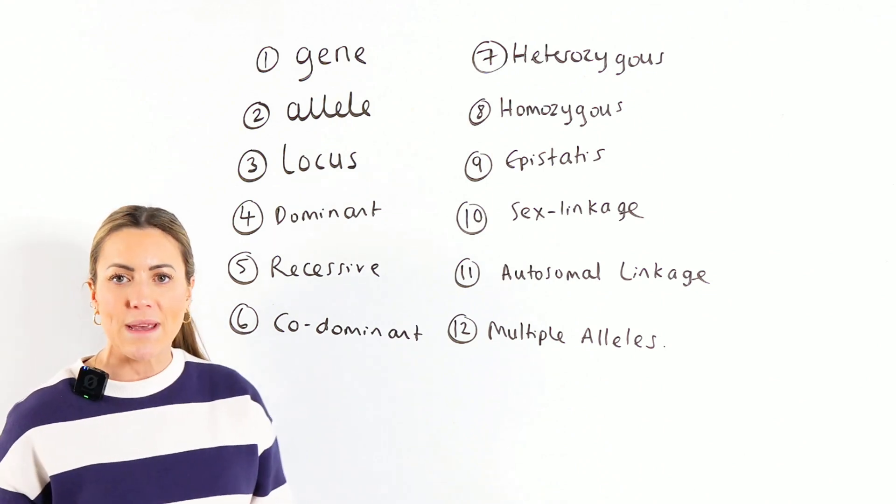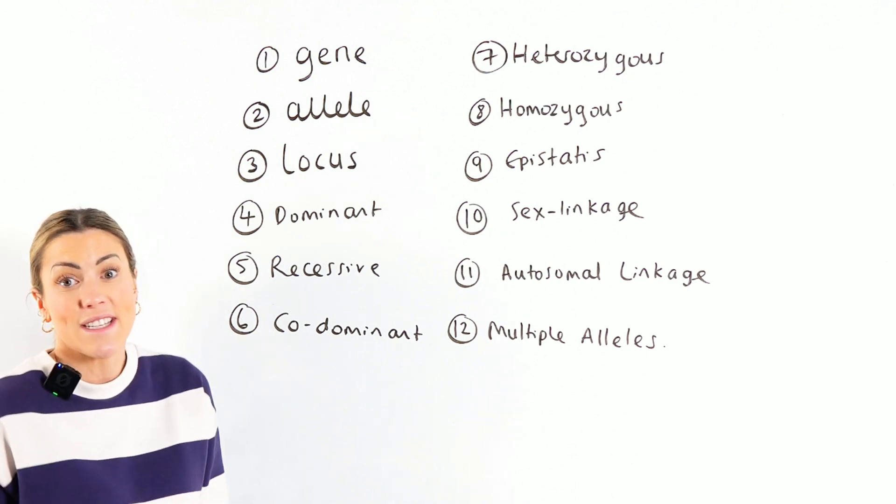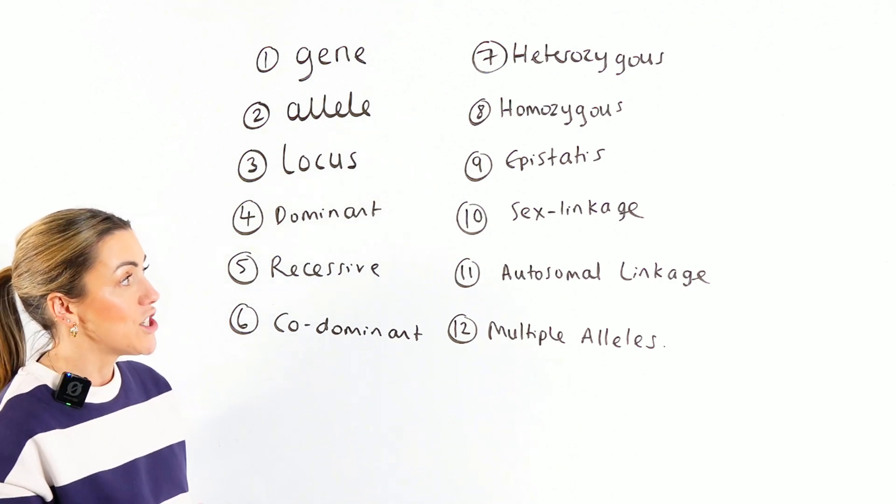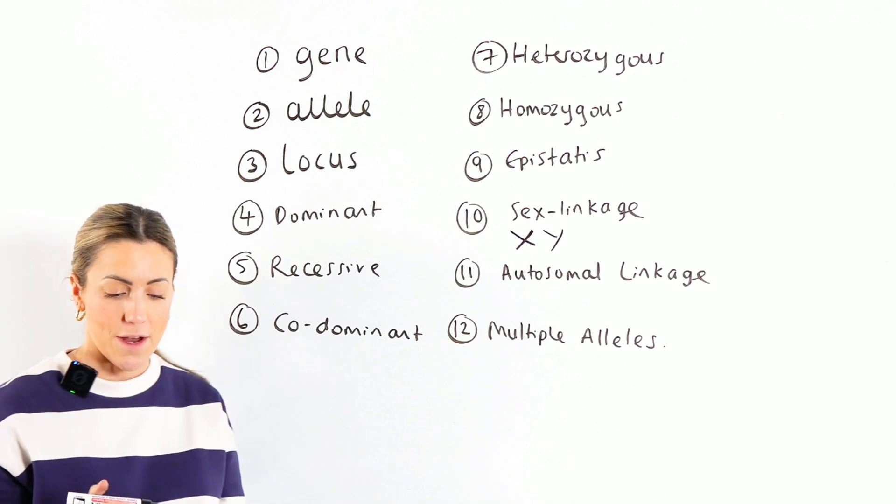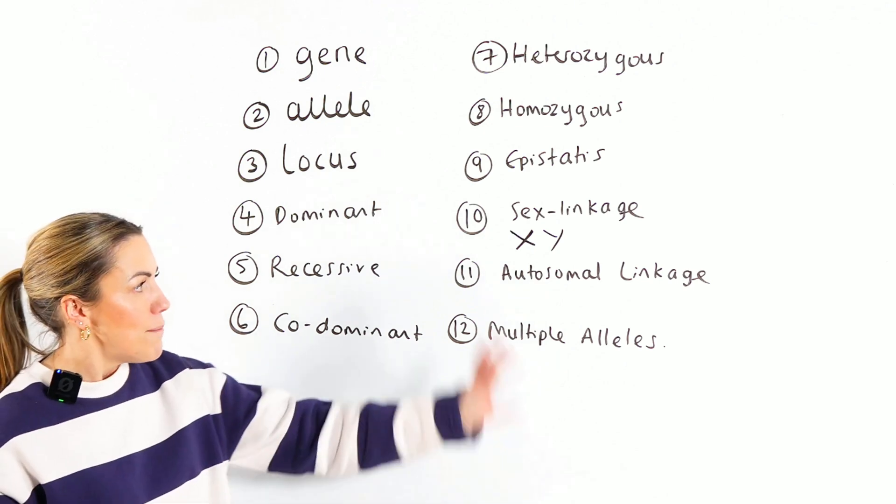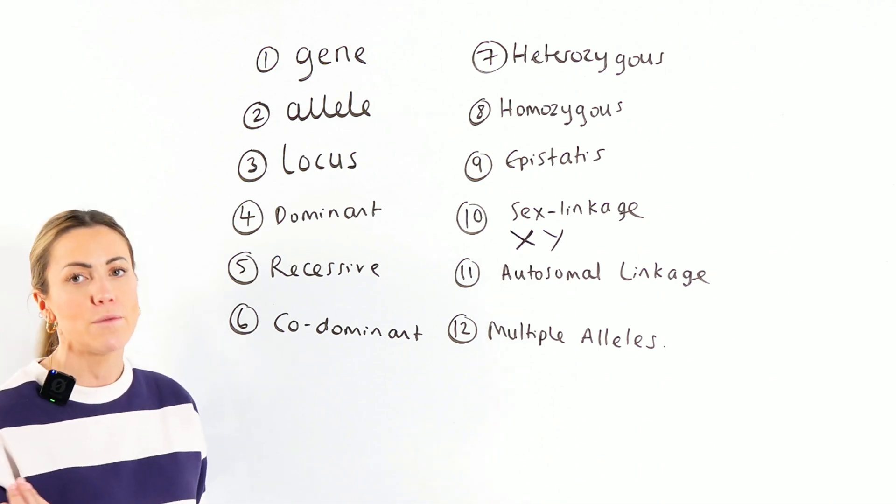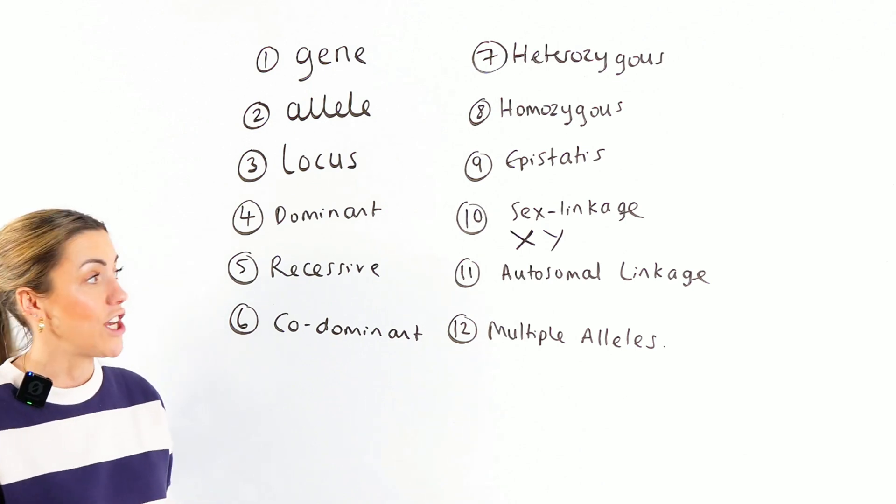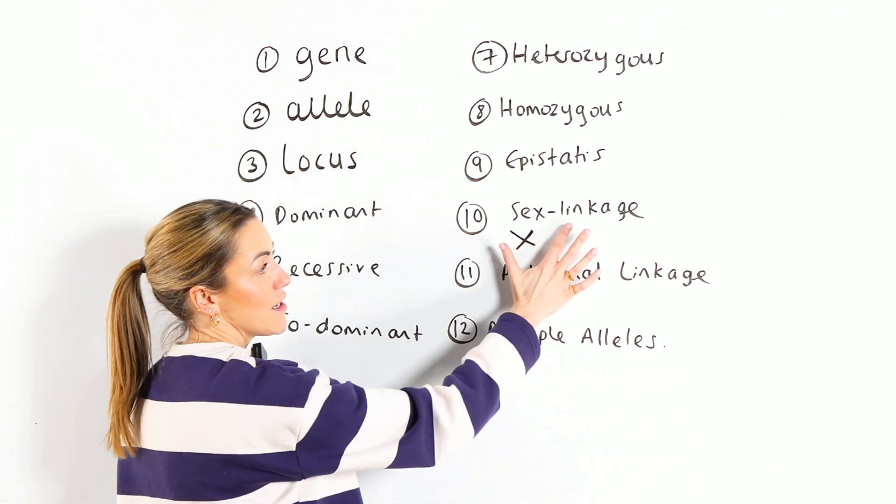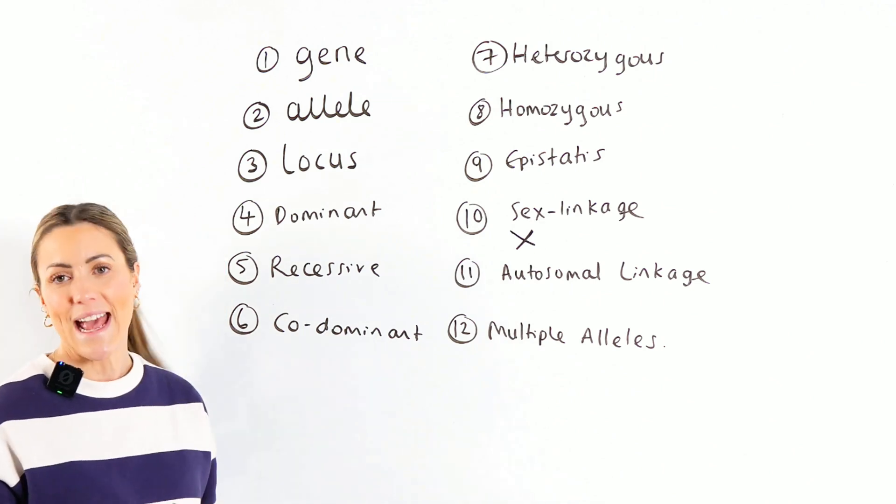Sex linkage. Now, sex linkage, strictly speaking, is a gene that is carried on a sex chromosome. So it's a gene that's found on like the X or the Y chromosome. But in reality, because the Y chromosome is so small and it has far fewer genes than the X chromosome, what we can say for our definition is that sex linkage is just a gene that is carried on the X chromosome.